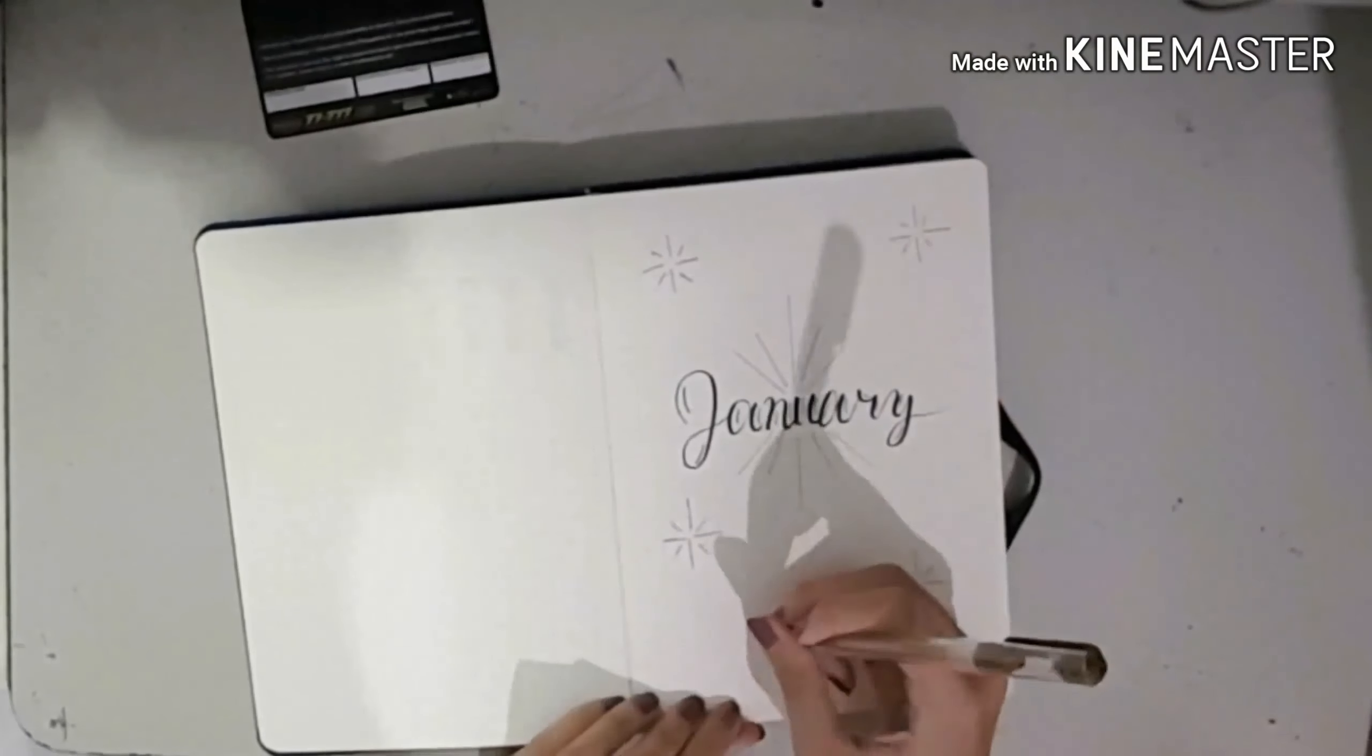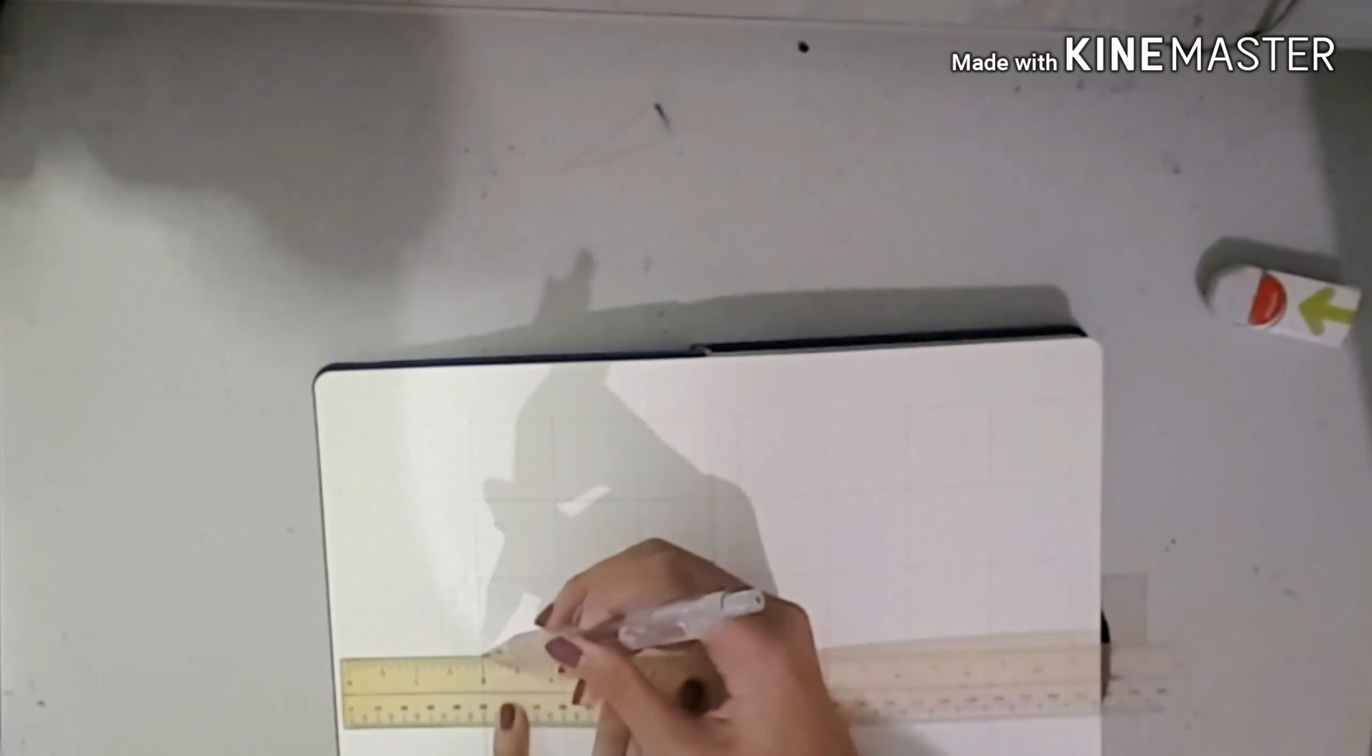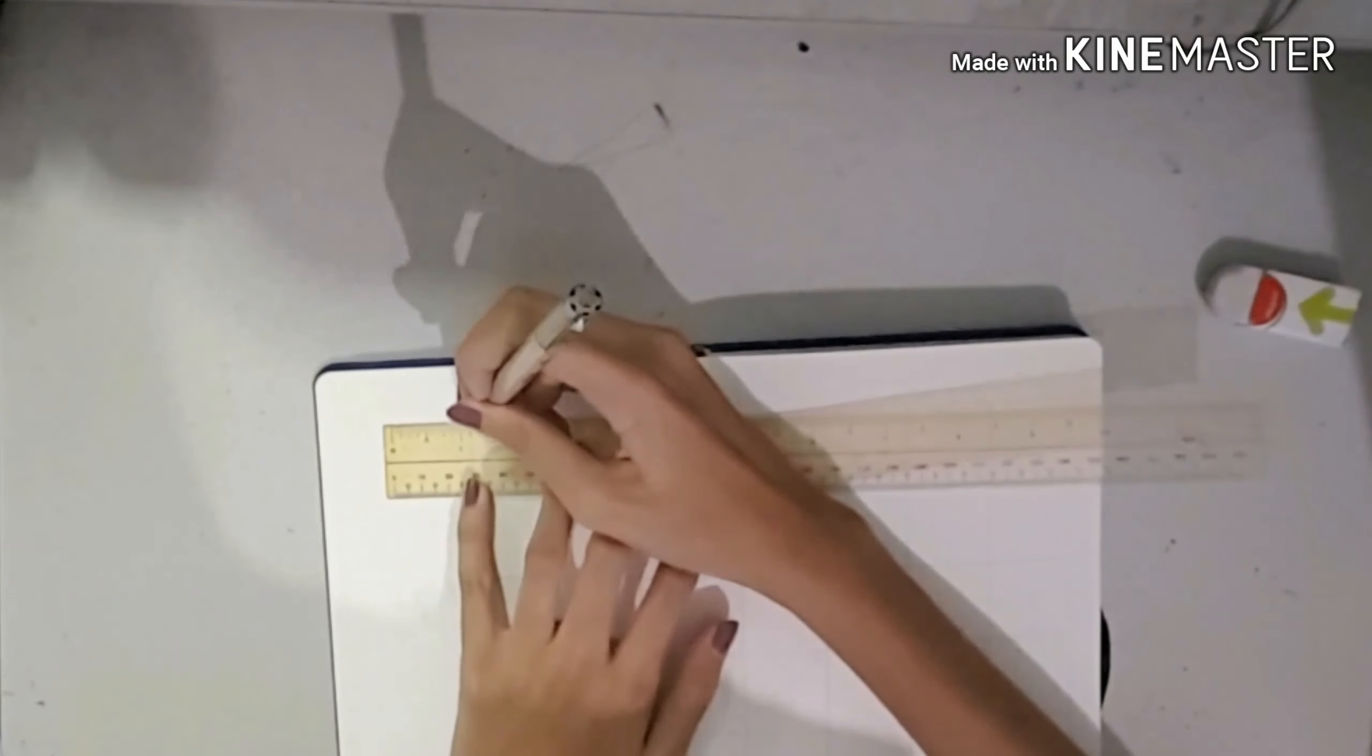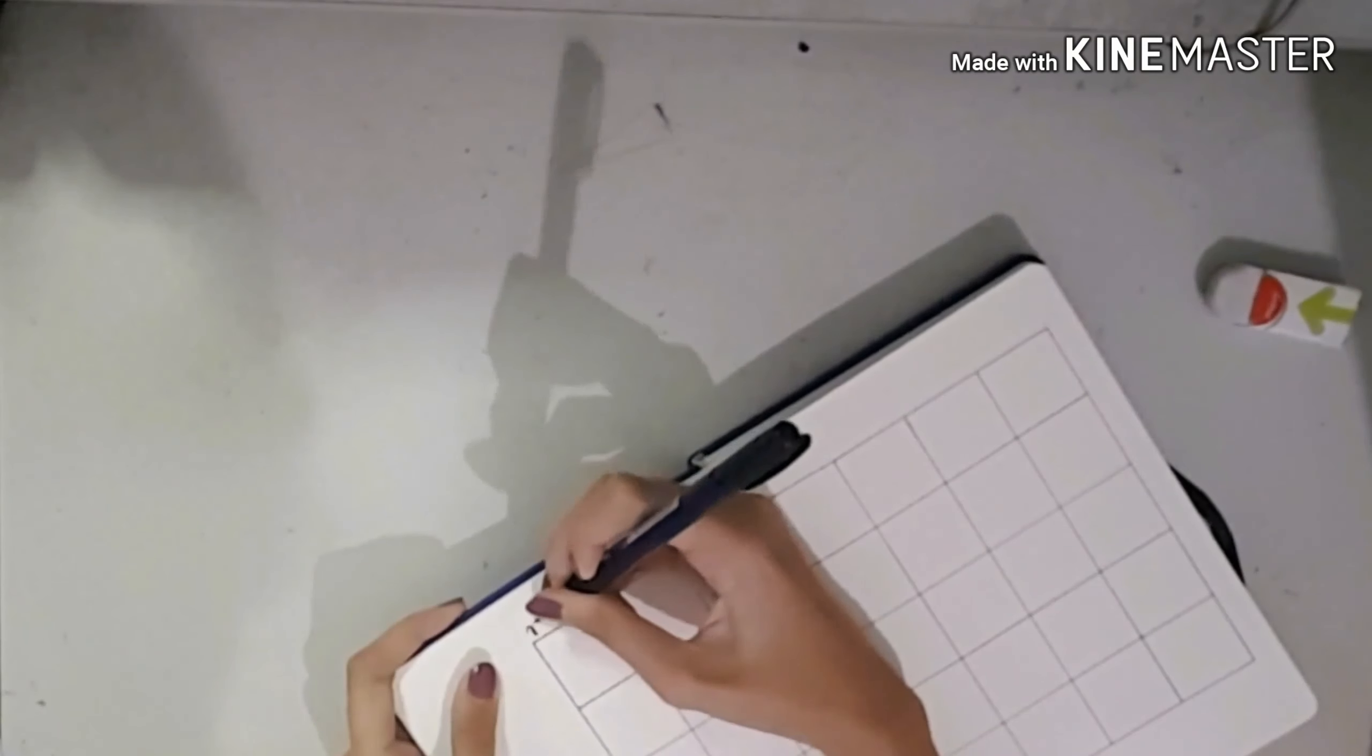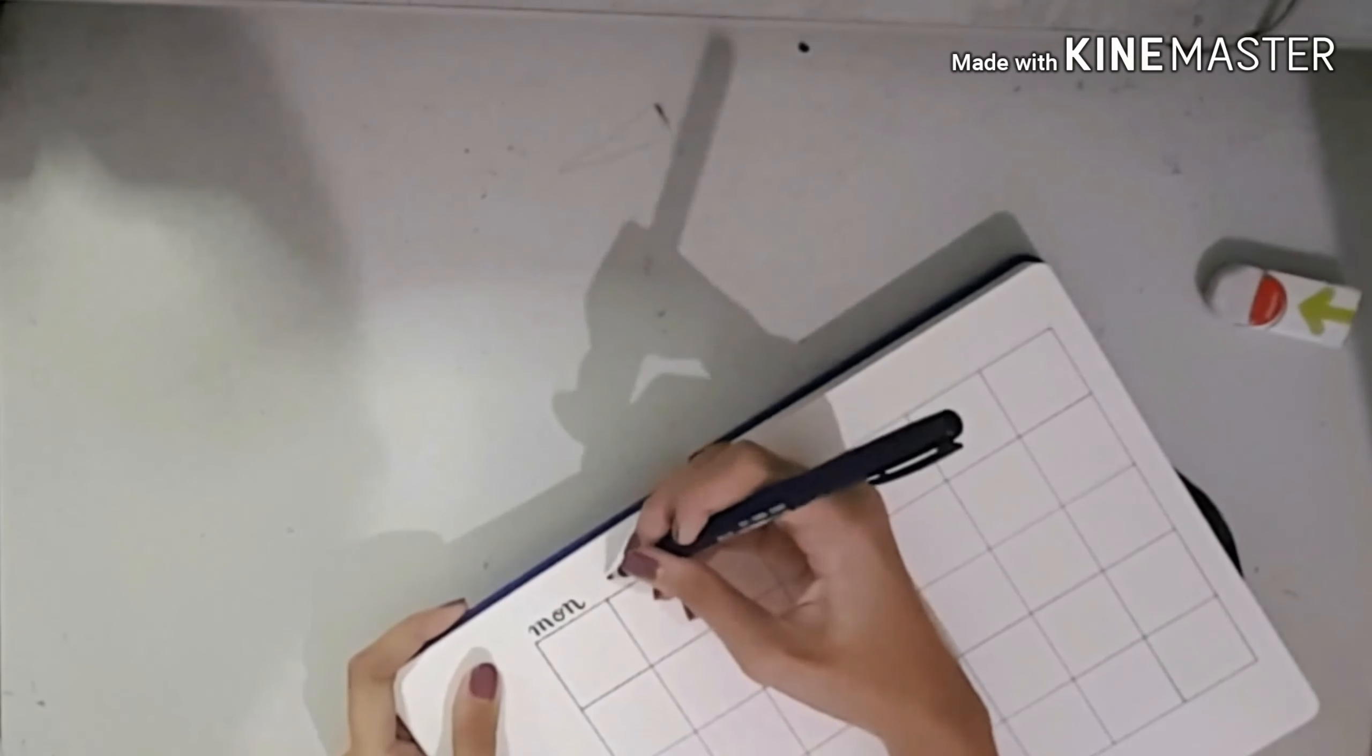But for me, that looks like gold on paper. Anyways, flipping to the next page, I'm making my monthly calendar. Basically, this is just a standard box-type calendar—I'm not sure if that's what it's called—but I'm making five rows and seven columns, and then I'm putting a label at the top.